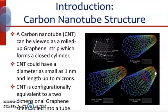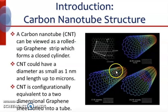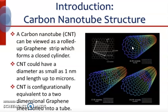Carbon nanotubes show a unique combination of stiffness, strength, and toughness compared to other fiber materials, which usually lack one or more of these properties. The thermal and electrical conductivity are also very high and comparable to other conductive materials.